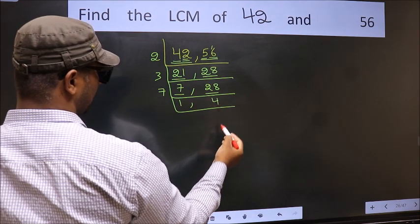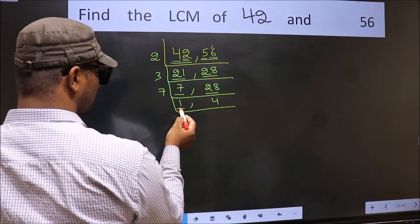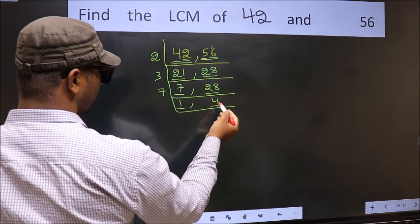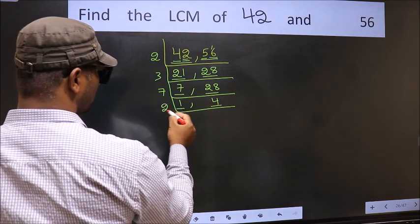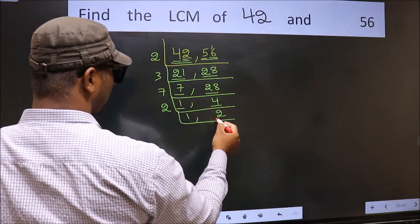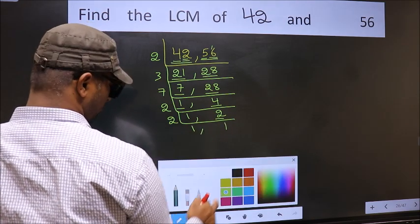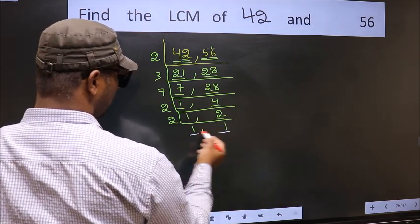Now we got 1 here, so focus on the next number, 4. 4 is 2 times 2 equals 4. Now we have 2. 2 is a prime number, so 2 times 1 is 2. We got 1 in both places, so our LCM is...